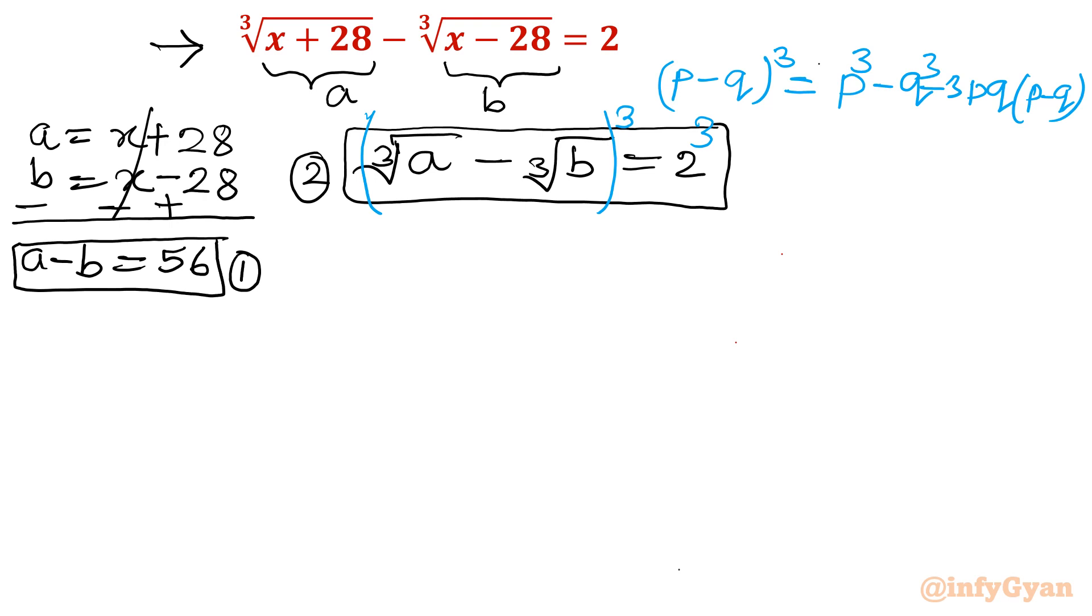Once I will take cube of this equation then I will apply p minus q. So cube root of a cube, I will have a minus b minus 3, the product of both. So let me write cube root of ab directly and cube root of a minus cube root of b. So I can write 2. This bracket is 2 equal to 8.